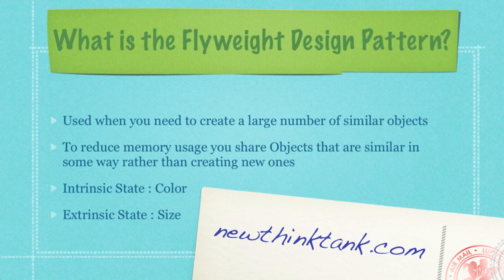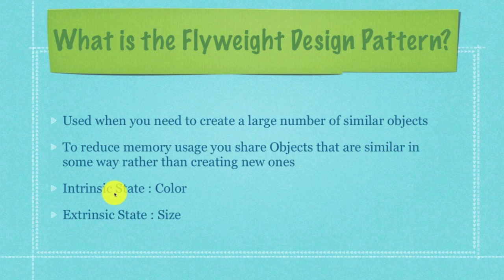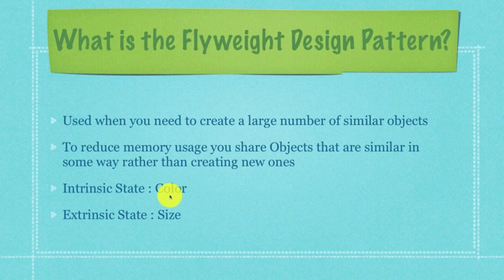So what is the Flyweight Design Pattern? It's used whenever you need to create a large number of very similar objects — I mean like 100,000 instead of 5,000. You use the Flyweight Design Pattern to reduce memory usage by sharing objects that are similar in some way rather than always creating new ones. In this tutorial, I'm going to shoot 100,000 rectangles onto the screen. When using this pattern, you hear about intrinsic state and extrinsic state. Every time I create a new rectangle that has a color already used, I'm not going to create a new rectangle object — I'll just share what's already been created with that similar color. That leaves the extrinsic states, which are the different sized rectangles. The speed loss will be in what is extrinsic — the different sizes — while the speed improvement will come from the intrinsic state, which is color, shared by all rectangle objects.